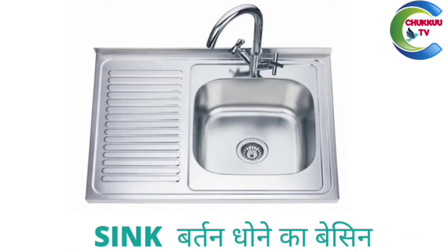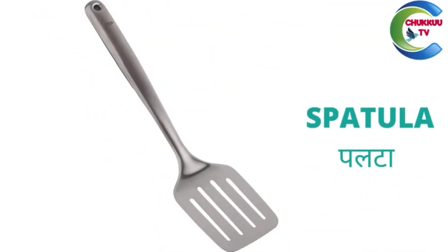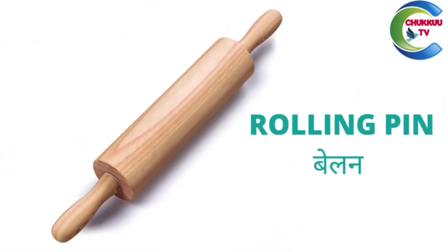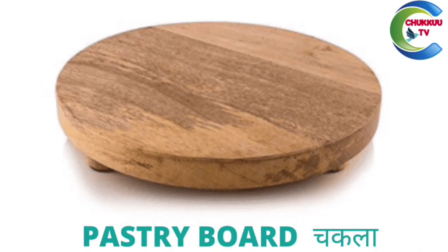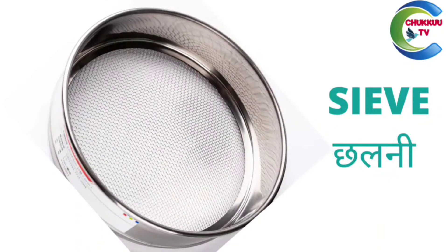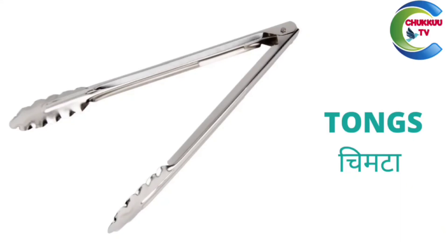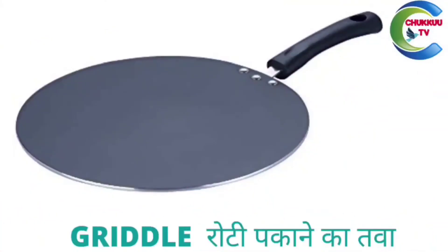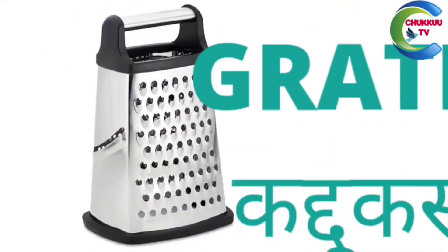This is a spatula — palta. This is a rolling pin — belan. This is a pastry board — chakla. This is a strainer — chai chalni. This is tongs — chimta. This is a griddle — roti pakaane ka tawa.